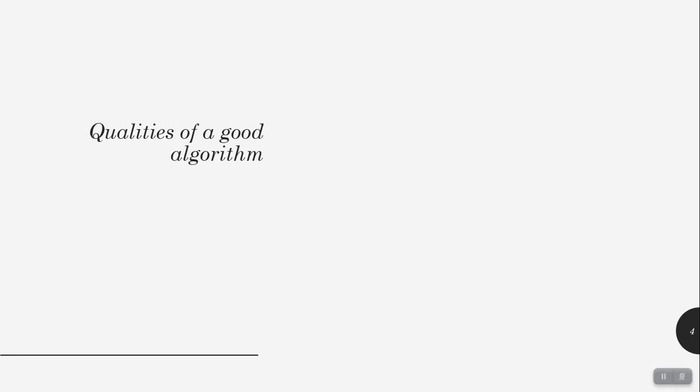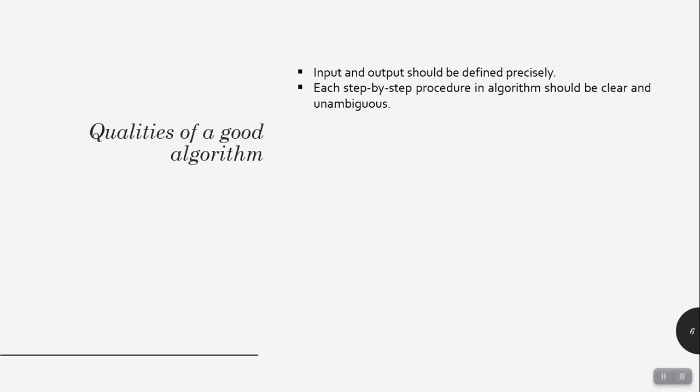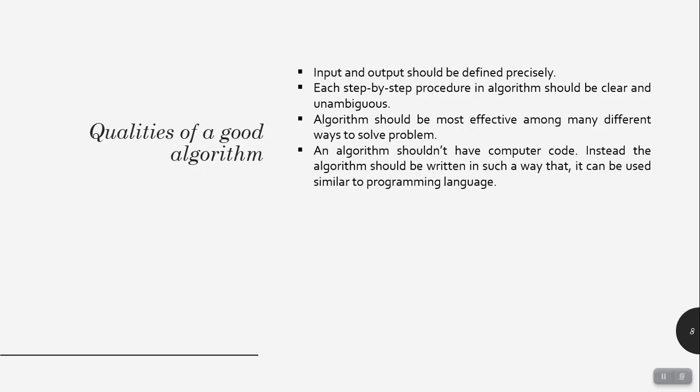Here are the qualities of a good algorithm. First, input and output should be defined precisely. Each step-by-step procedure in the algorithm should be clear and unambiguous. The algorithm should be the most effective among many different ways to solve a problem. And the algorithm should be written in such a way that it can be used similarly to programming languages.